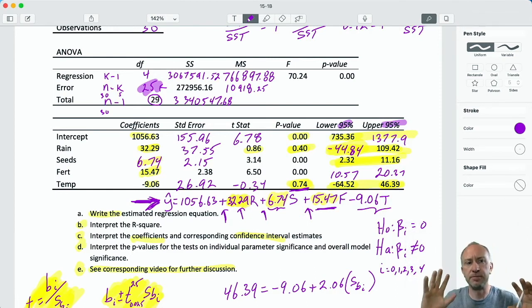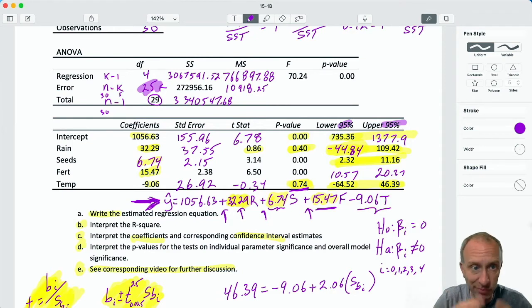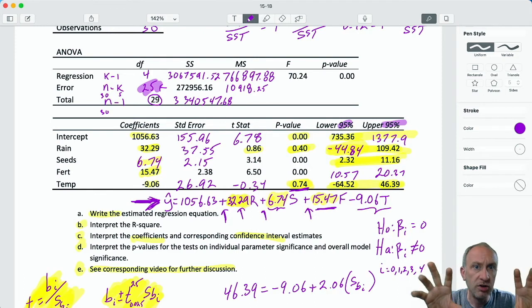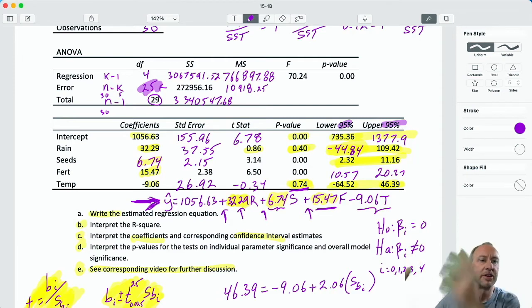Just to avoid confusion on an exam, what I would generally do and what is generally accepted would be to group your conclusions into here's the ones that I reject, here's the ones that I do not reject. So I would say we have evidence to reject the null hypotheses for the test on seeds and fertilizer, and provide the interpretation that I've just given. I have insufficient evidence to reject the null hypotheses for the coefficient of rain and temperature, and then go on to say what that means. So you can just lump those. Here's the ones that are significant, here's the ones that are not significant.